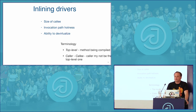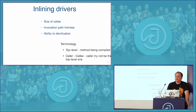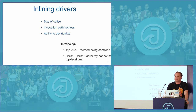Another important factor is the ability to devirtualize. In Java, all methods are by definition virtual. We can devirtualize by looking at properties like static or final, or by analyzing the class hierarchy. If we know a class has no subclasses or derived classes, we can devirtualize methods of that class. This is called class hierarchy analysis — it's present in every virtual machine and very helpful to JIT compilers.